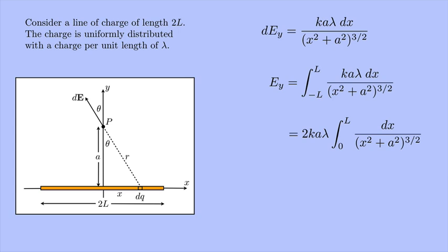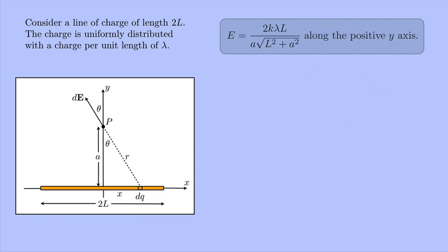Now you could go through and do this integration, and in another video I'll show you how to do it. Or you could just go ahead and look it up. So I'm just going to give you the answer right now, and then later on we'll look at how to actually do that integral. So it ends up being 2kλL over a times the square root of L² plus a². So now I know both the magnitude and the direction of the electric field.